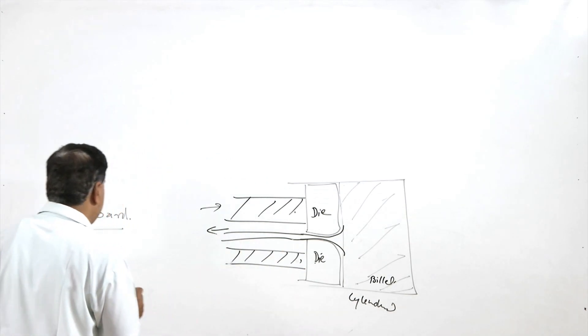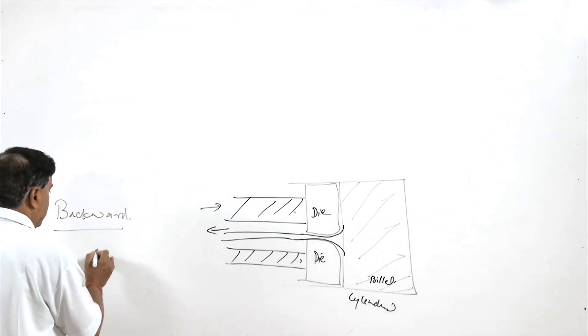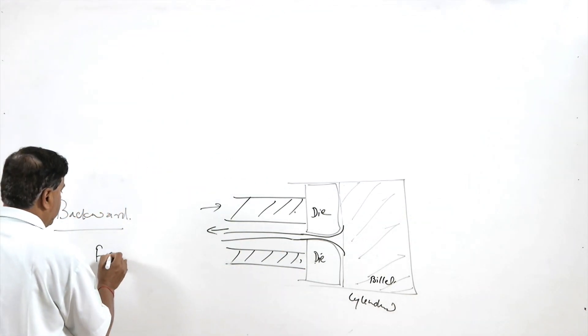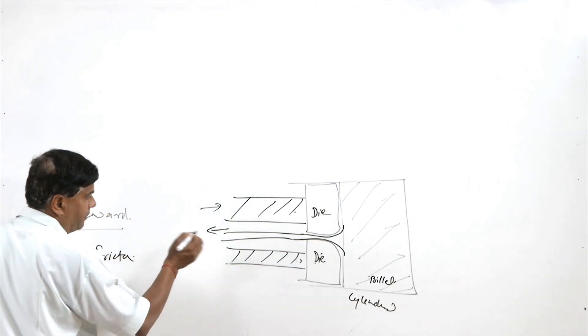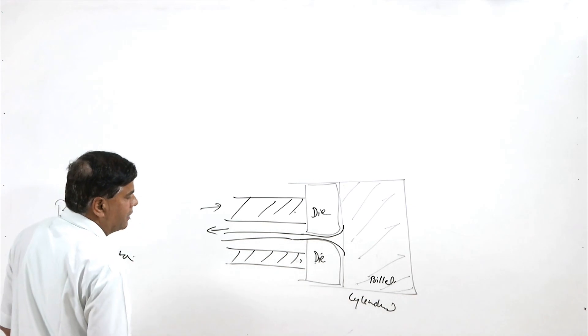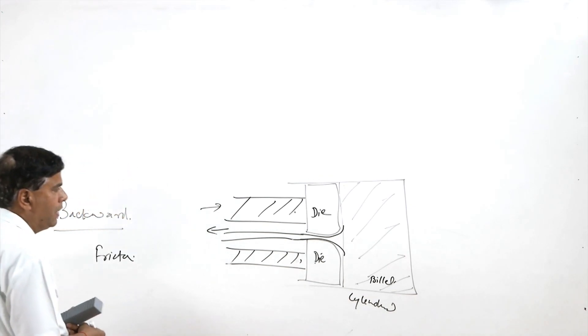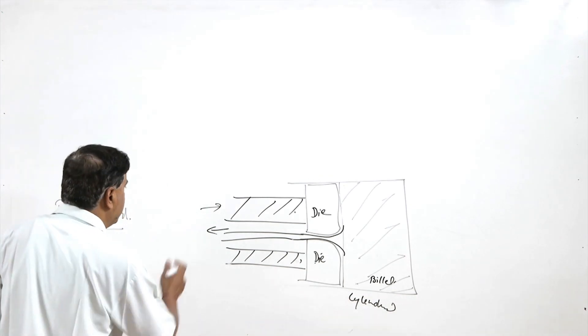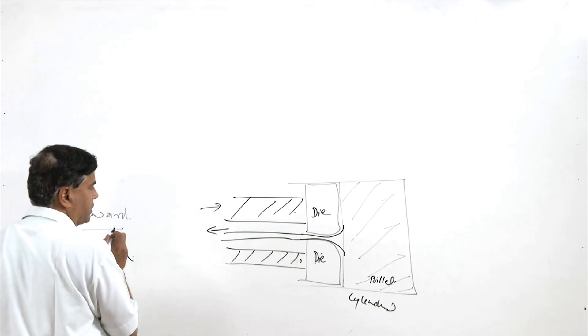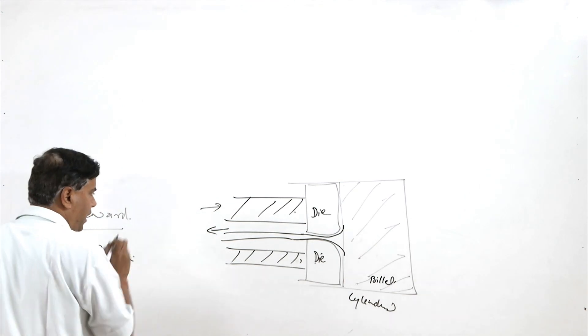The frictional effect between the billet and the cylindrical container wall is effectively taken care of using the backward extrusion process.